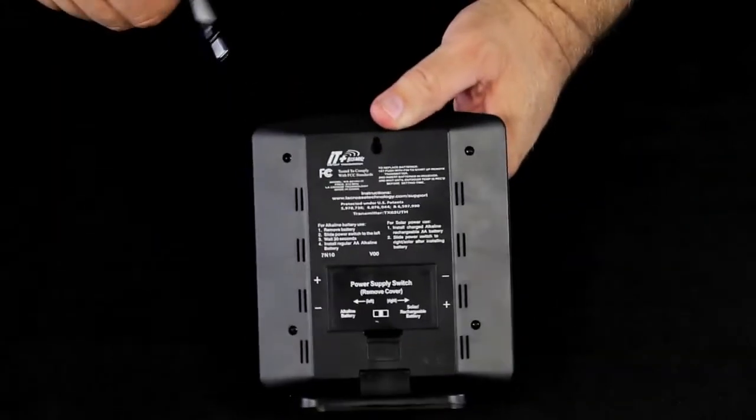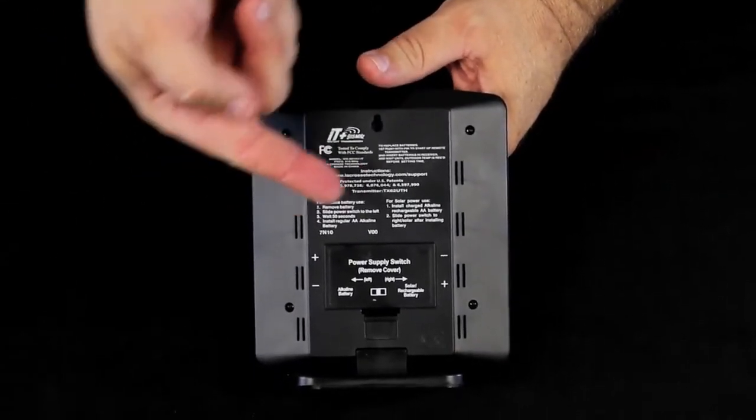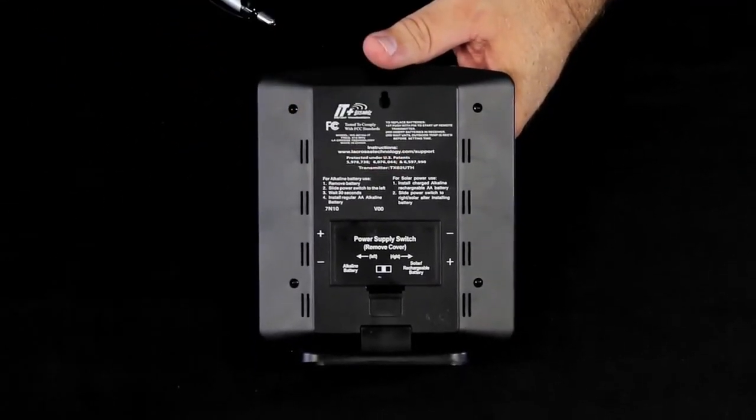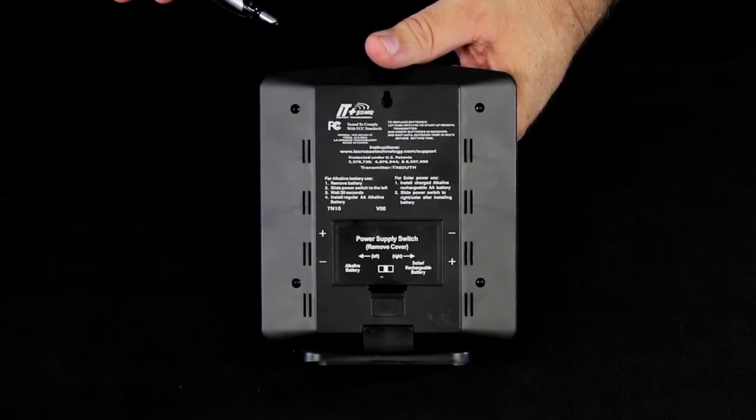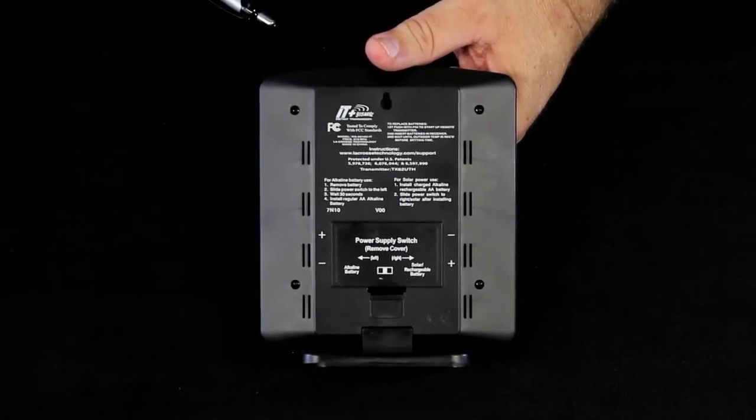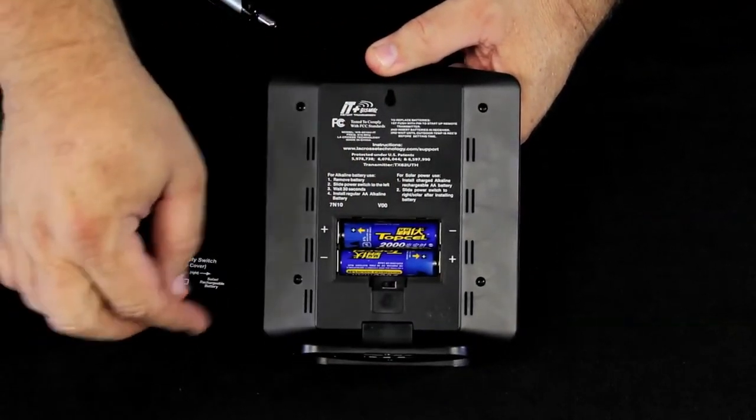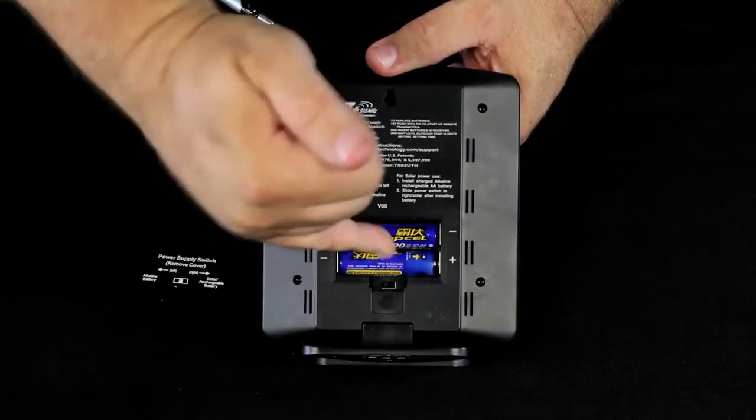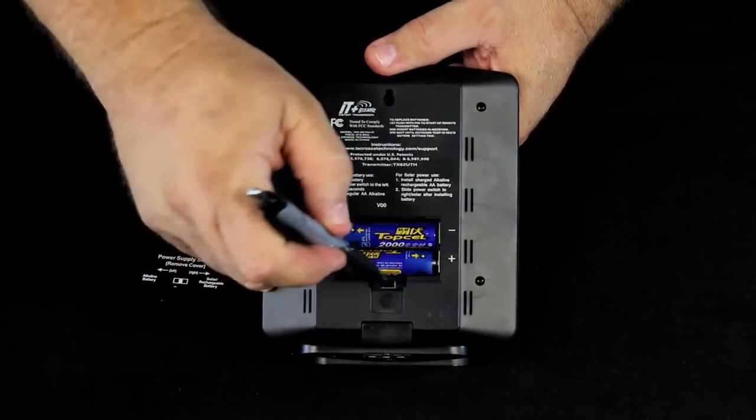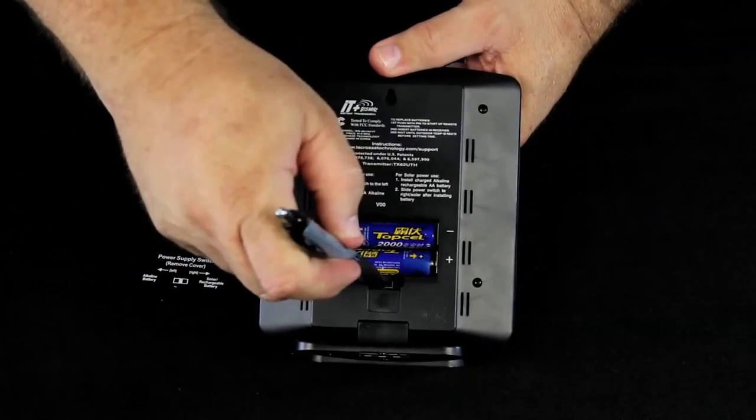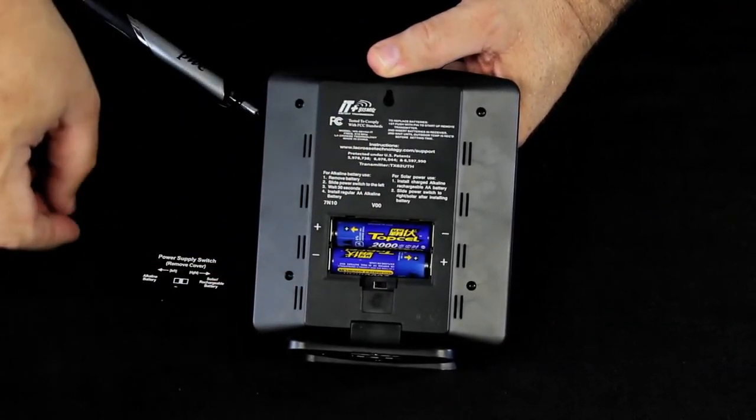We just did our startup with a standard alkaline battery. You can also solar power this using the fully charged alkaline rechargeable AA battery. If you do that when you put the batteries into the system, you're simply going to slide this switch all the way over to the right.